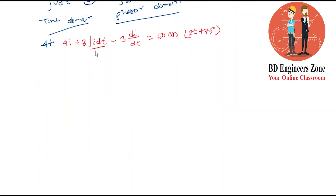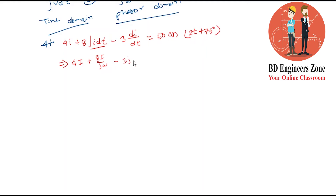Converting to the phasor domain: 4I plus 8I divided by jω, minus jωI, equals the phasor source. This is the phasor domain representation of the equation.